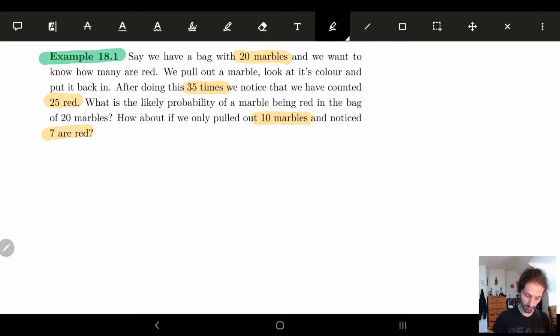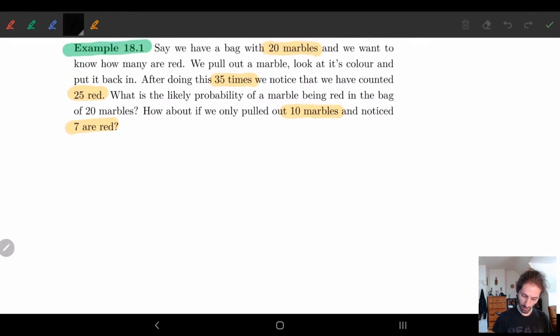So here what do we have? We have n is equal to 20. We know there's 20 marbles altogether. We know n is equal to r plus b. We don't know what r is. We don't know what b is. So for now we're just going to leave these blank.